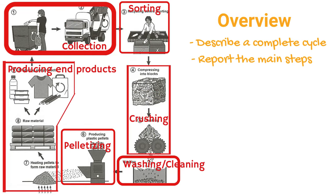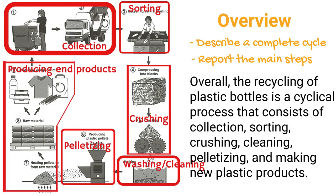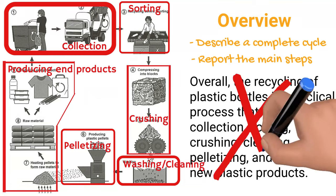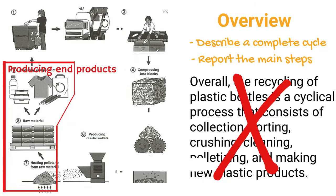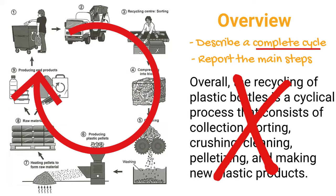So we may write our overview paragraph like this: 'Overall, the recycling of plastic bottles is a cyclical process that consists of collection, sorting, crushing, cleaning, pelletizing, and making new plastic products.' There is a big problem here — we don't have a complete cycle. The cycle has not been closed. If there is no cycle, we can't call it a cyclical process.